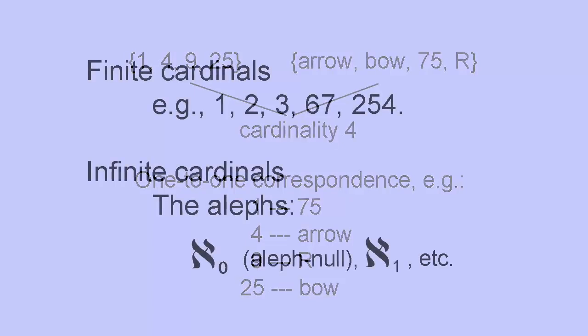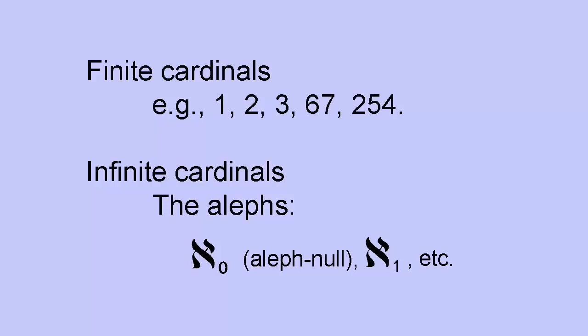The finite cardinals, the cardinals that measure the size of finite sets, are just the natural numbers zero, one, two, three, and so on. The first infinite cardinal is called aleph null, and measures the size of the set of all natural numbers.